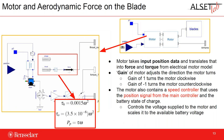Next we have our motor model. This motor sends a thrust and two torques to spin the rotor. The motor takes in input position data and translates that into a force and torque from the electrical motor model. We also have a gain component that allows us to adjust the direction of the motor — a gain of one turns the motor clockwise and negative one turns it counterclockwise. A speed controller uses the position signal and the battery state to scale the voltage applied to the motor accordingly.